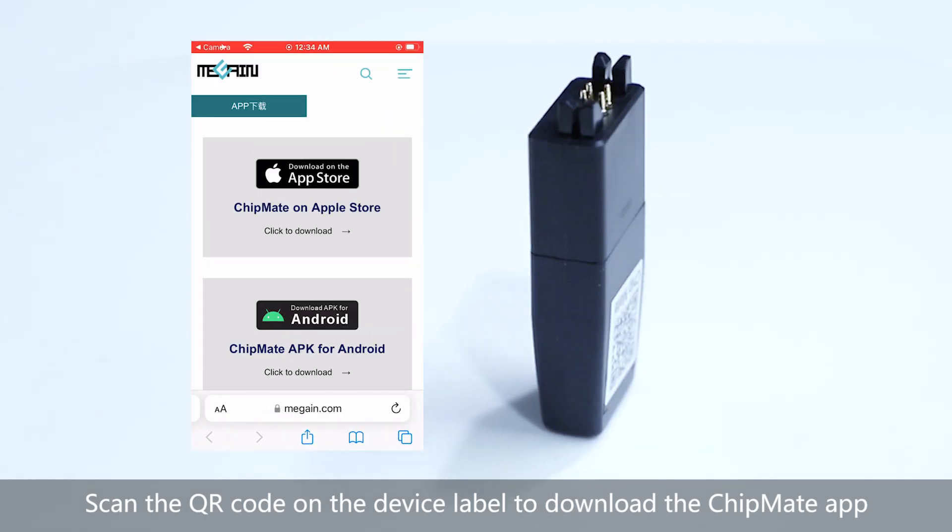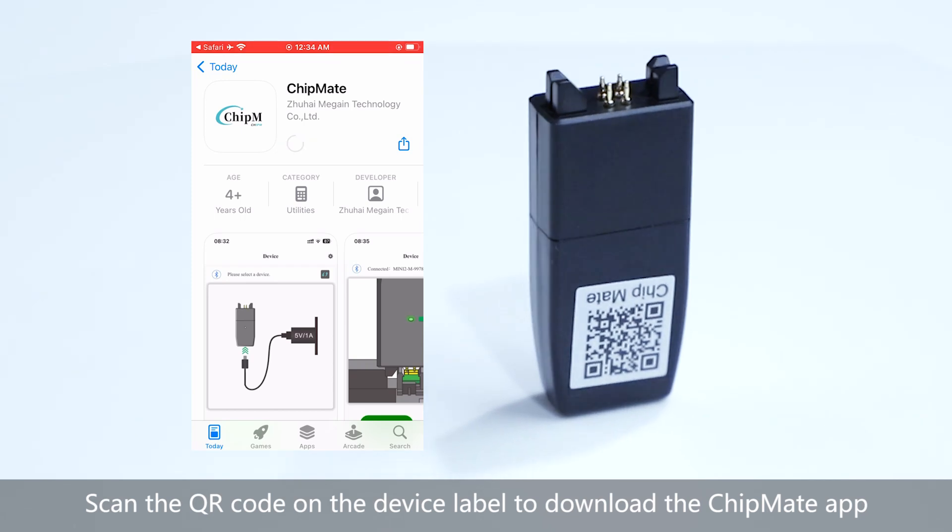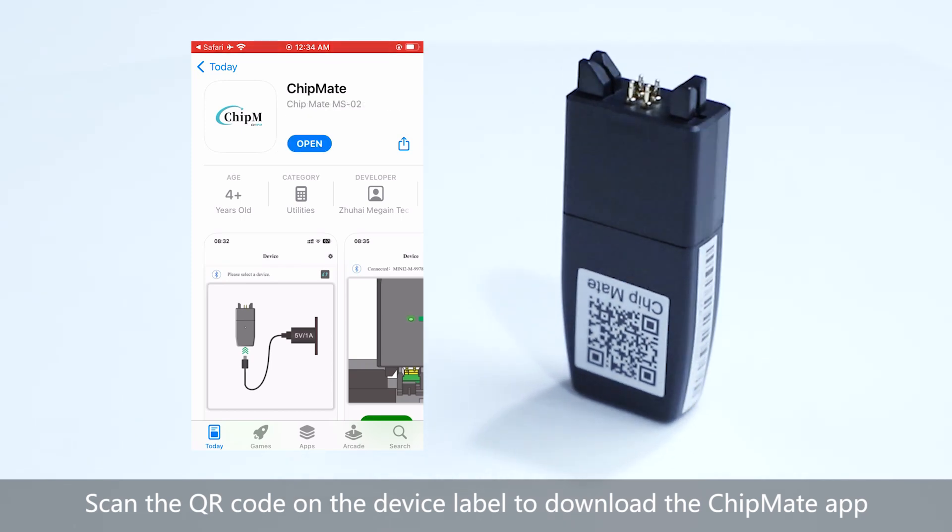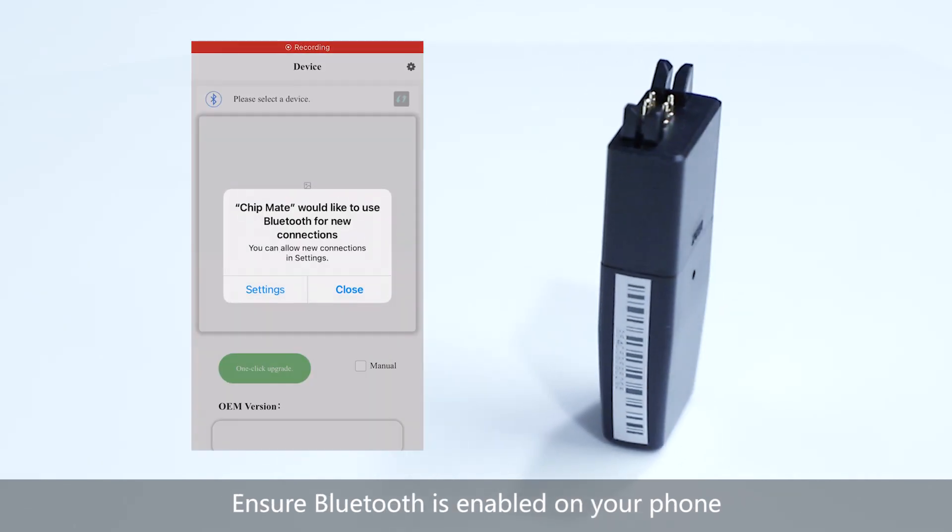Scan the QR code on the device label to download the ChipMate app. Ensure Bluetooth is enabled on your phone.